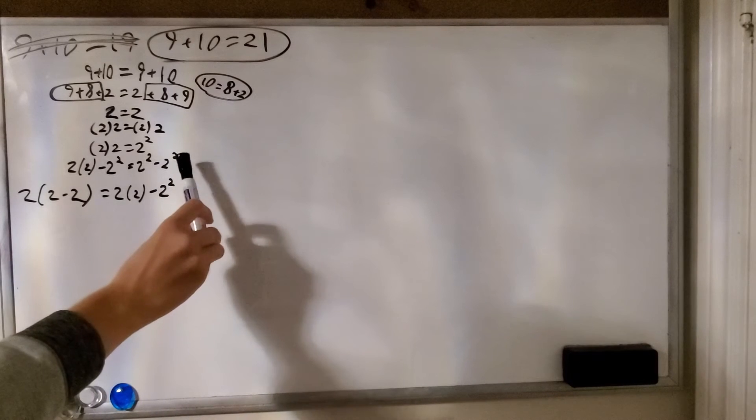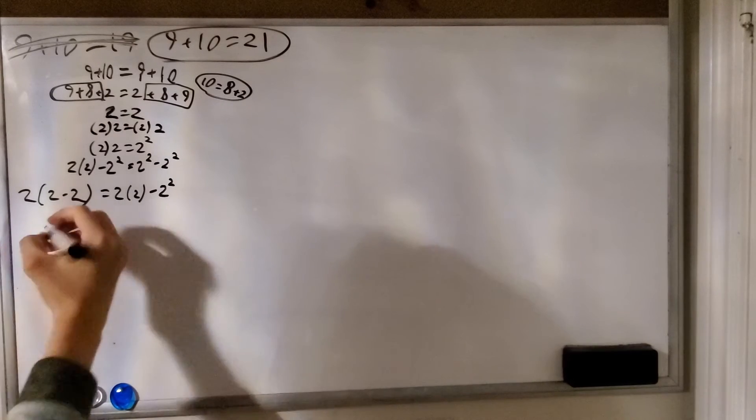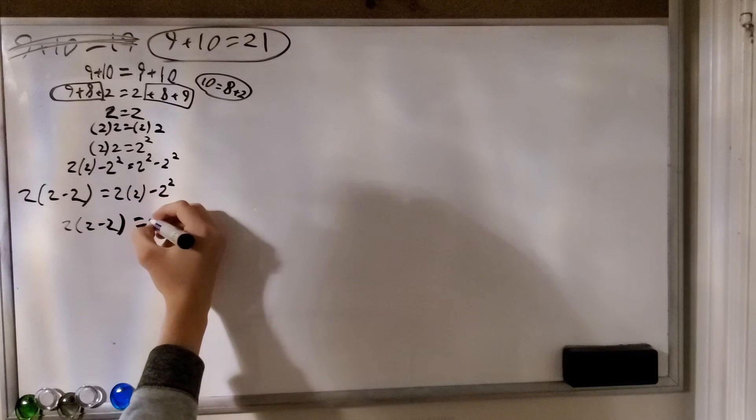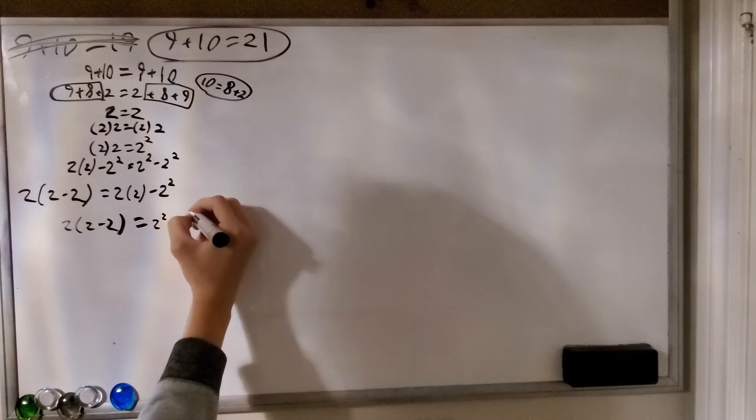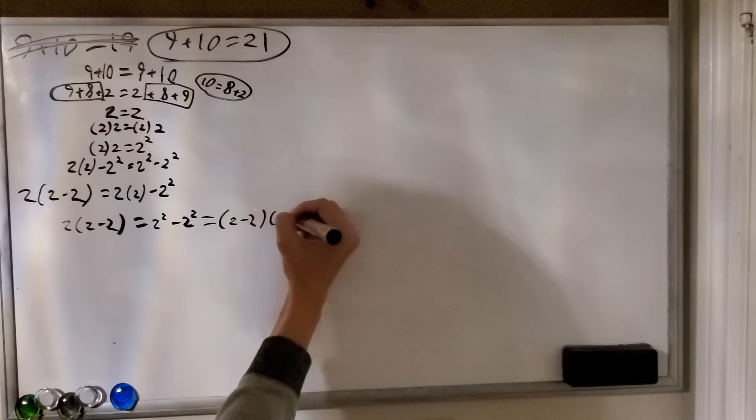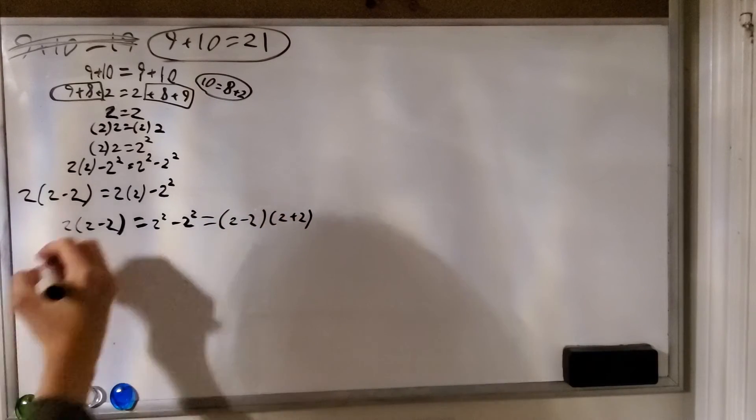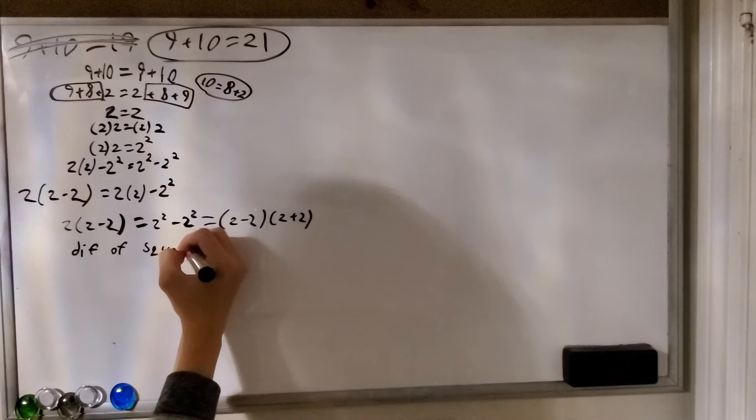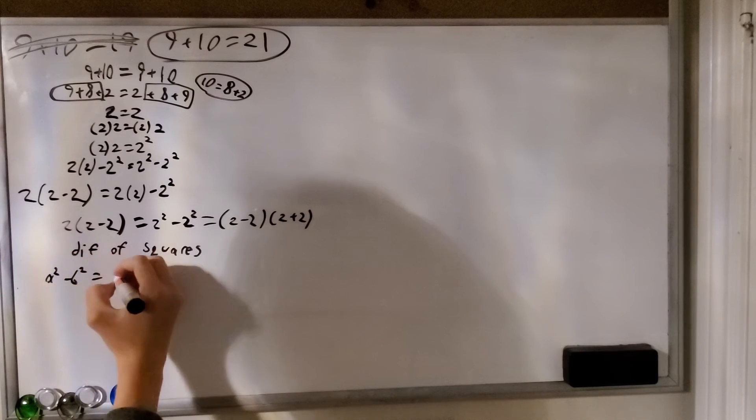And remember, 2 times 2 minus 2 to the power of 2 is equal to 2 to the power of 2 minus 2 to the power of 2. So we can say that 2 times 2 minus 2 is equal to 2 to the power of 2 minus 2 to the power of 2. And 2 to the power of 2 minus 2 to the power of 2 itself is actually equal to 2 minus 2 times 2 plus 2. To understand why, we have to look at a mathematical rule called the difference of squares.